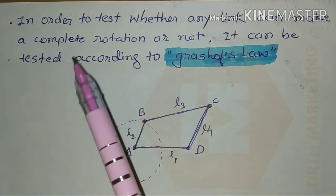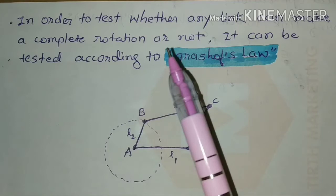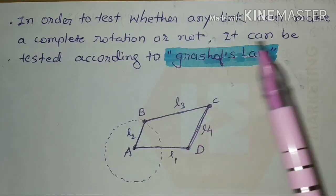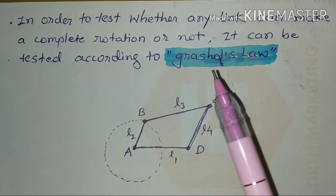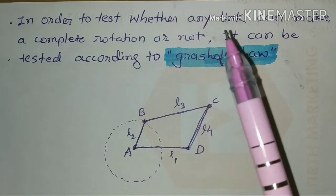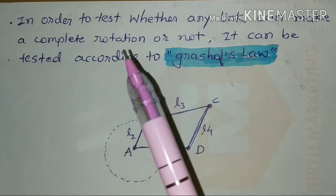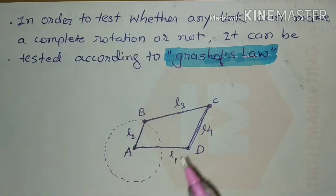In order to test whether any link can make a complete rotation or not, it can be tested according to Grashof's law.